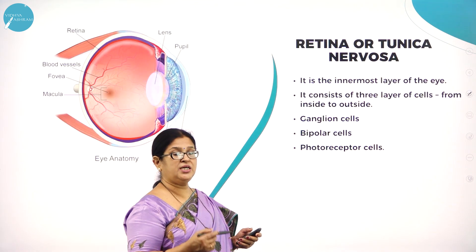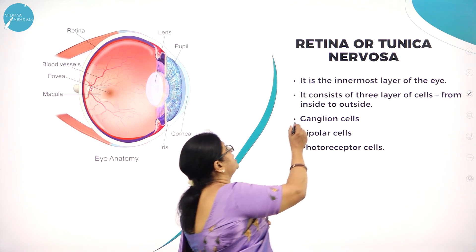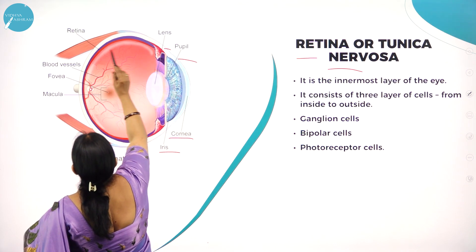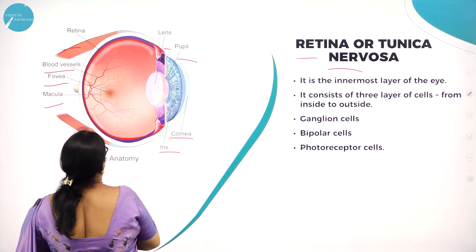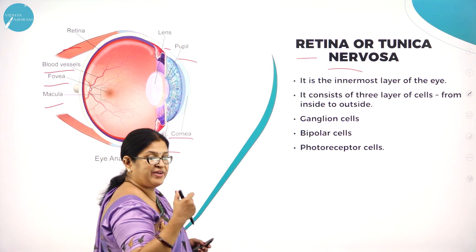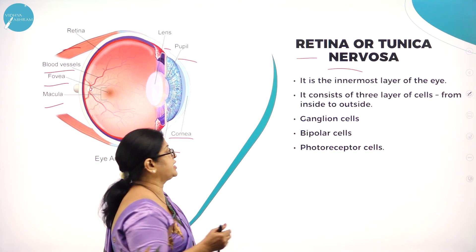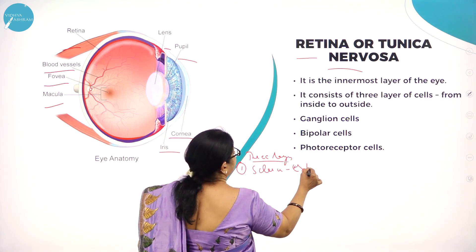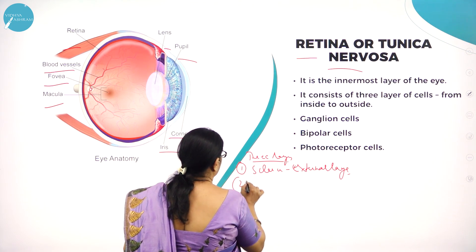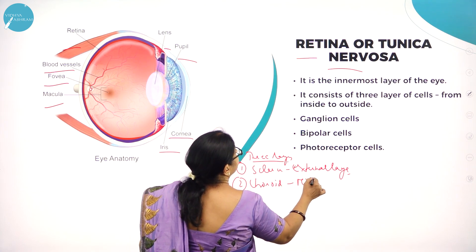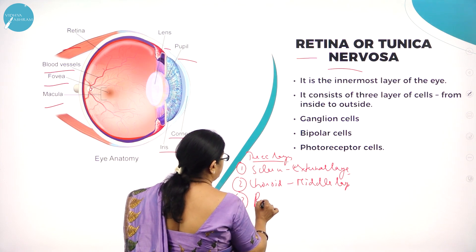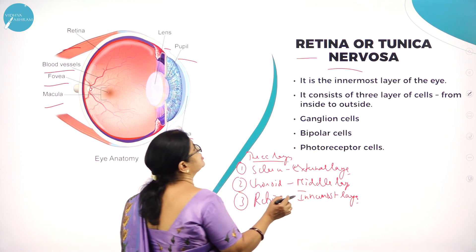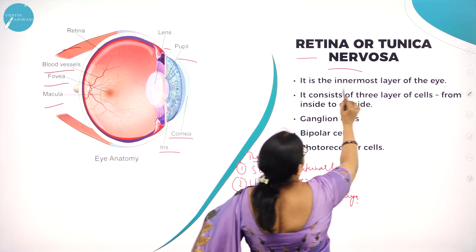Moving on to the retina, the third layer of the eye, which is also called tunica nervosa. It is the innermost layer of the eye. Here you can see the cornea, pupil, lens, retina, blood vessels, fovea, and macula. Even in the eye we can see blood vessels when eyes become red. The three layers are: sclera — the external layer; choroid — the middle layer; and retina — the innermost layer.